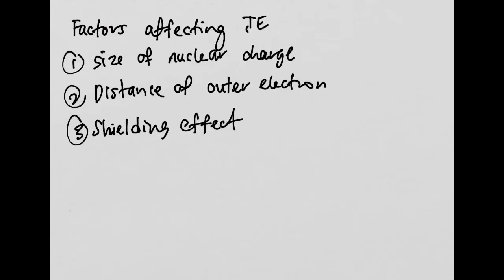There are three factors affecting ionization energy. One is the size of the nuclear charge, second is the distance of the outer electrons from the nucleus, and third is the shielding effect of the inner electrons. When you have a greater nuclear charge, the nucleus has a stronger attraction towards the electrons — so when proton number increases, the nucleus attracts electrons more strongly.